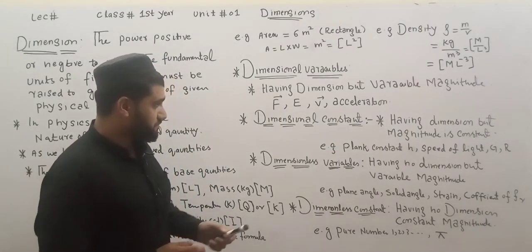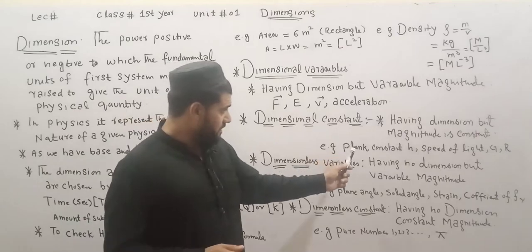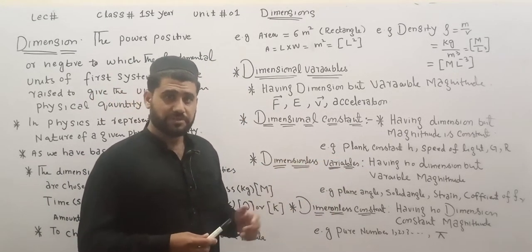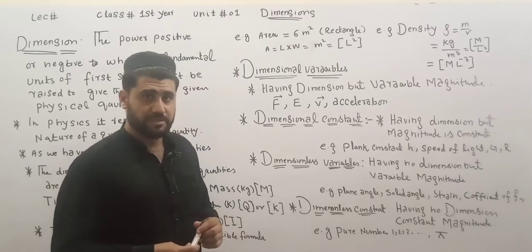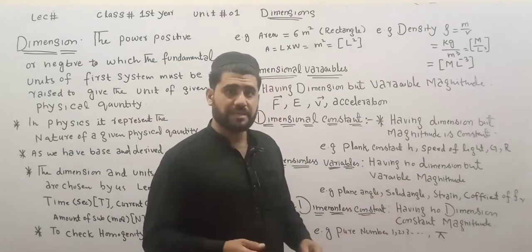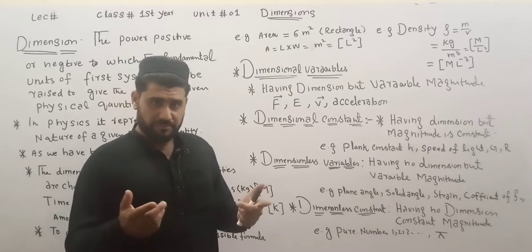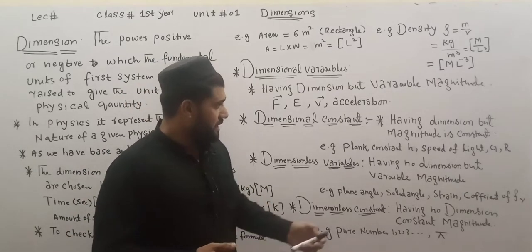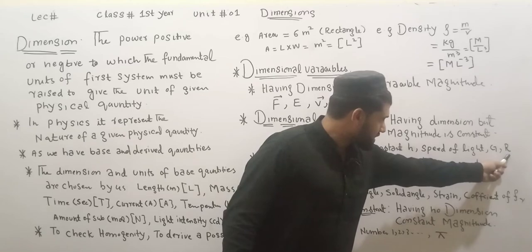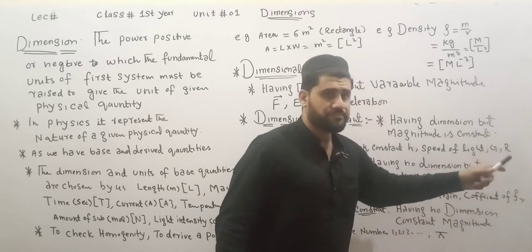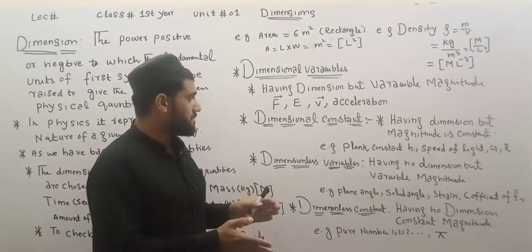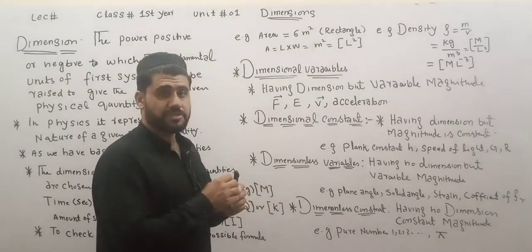For example, Planck's constant H will have a dimension — and the ratio is a related ratio: energy to frequency. The speed of light will also have a dimension. These dimensional constants have a fixed value, but they have a dimension — the value constant is the dimension of the dimension.